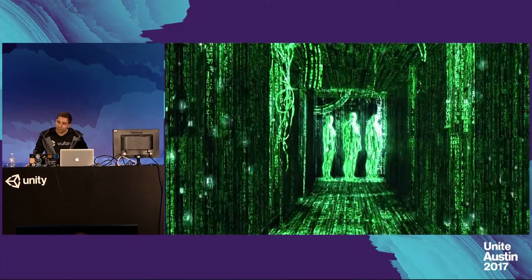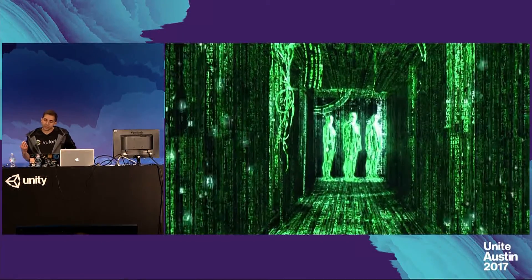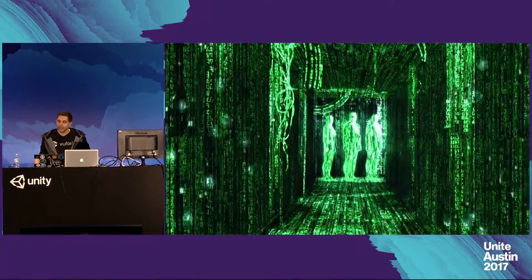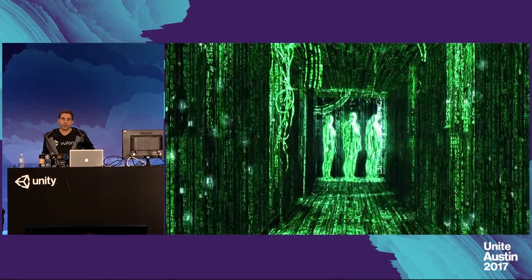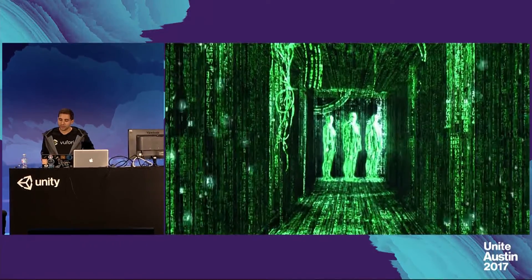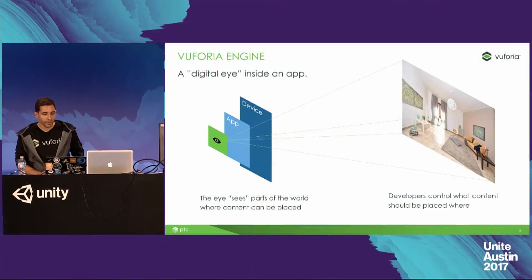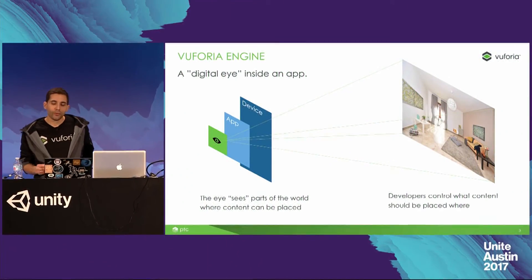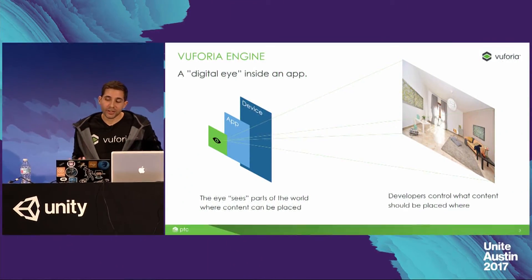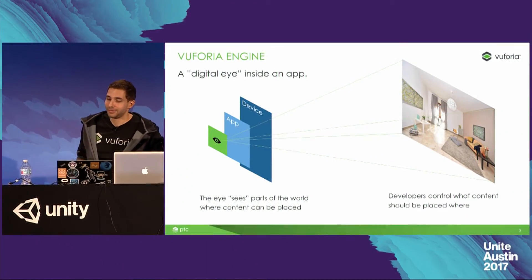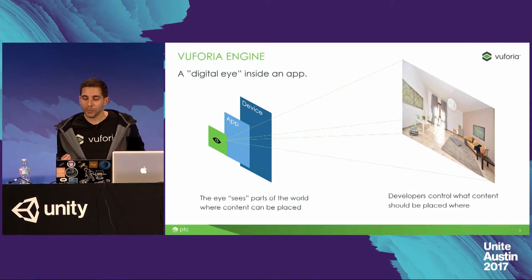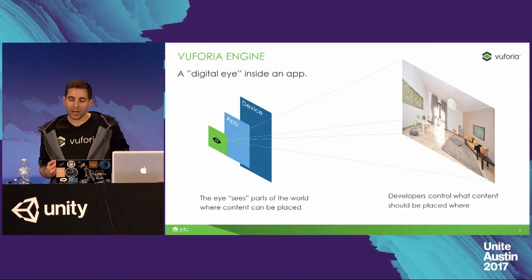In the movie The Matrix, the character Neo gains the ability to see the source code of the Matrix itself — the world. And as a result, he could remake the Matrix as he saw fit. While Vuforia won't teach you Kung Fu — I wish it did — it will help you manipulate virtual content in the real world.